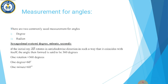If the initial ray AB rotates in anticlockwise direction in such a way that it coincides with itself, the angle then formed is said to be 360 degrees. Basically ek ray hai AB jo anticlockwise direction mein move kar rahi hai is tarah ke woh khud ko ja mile, to wahan pe angle 360 ka banega. One rotation equal hai 360 degrees ke. One degree equal hai 60 minutes ke. One minute equal hai 60 seconds ke.